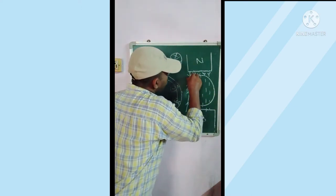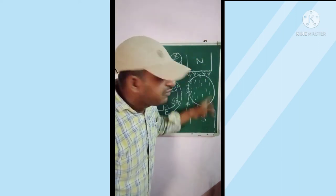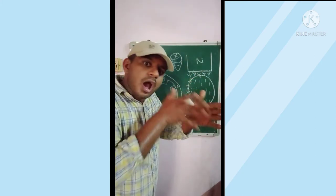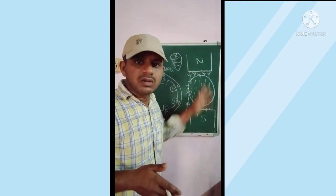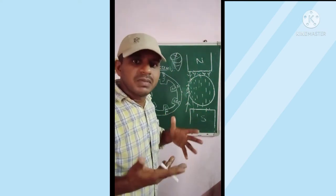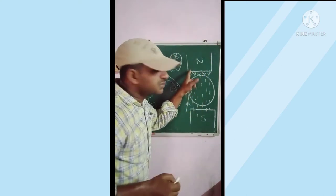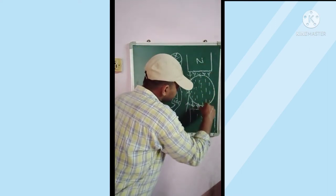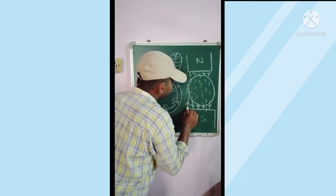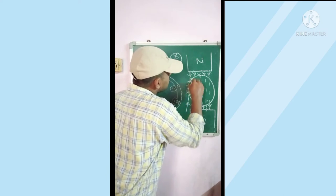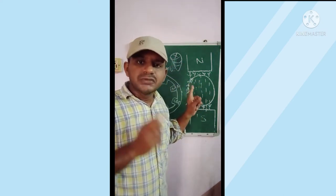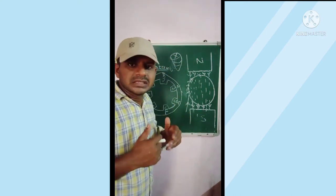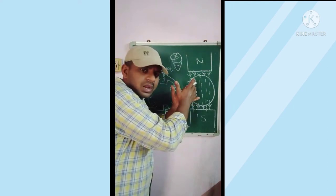When supply is given to the field poles, flux already exists flowing from north pole to south pole — this is the main field flux. The main field flux flows from north pole to south pole. When the current flows in this direction, if you observe the diagram you can clearly understand that the rotor rotates in the anti-clockwise direction.